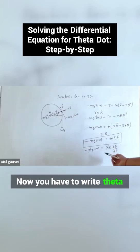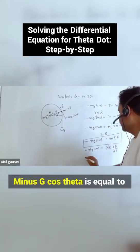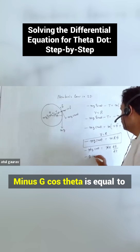Now you have to write theta dot as a function of theta. So you write minus g cos theta is equal to r.